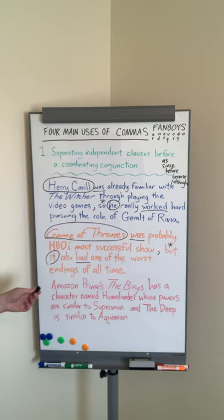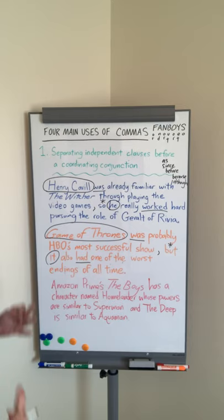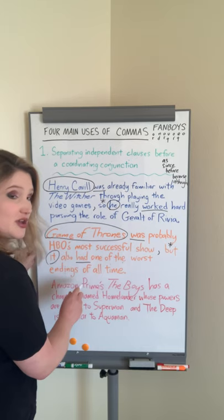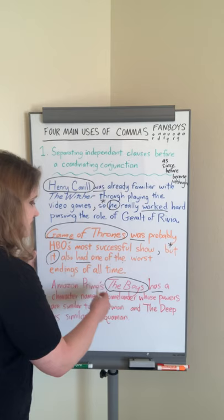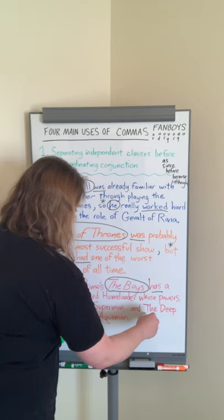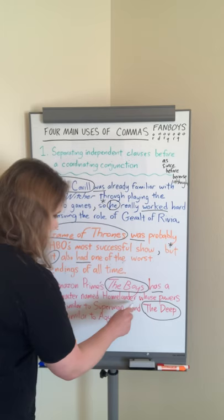For the last one: 'Amazon Prime's The Boys has a character named Homelander whose powers are similar to Superman, and the Deep is similar to Aquaman.' We've got two independent clauses here. The subject of the first one is The Boys — 'The Boys has' — then it switches to the subject being The Deep — 'The Deep is.' Our coordinating conjunction is 'and,' and again we just need a comma there to separate.